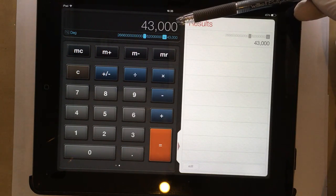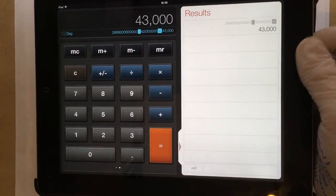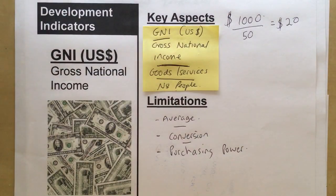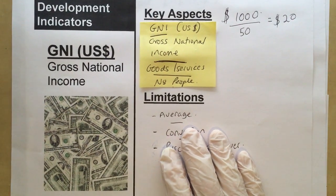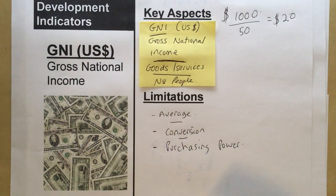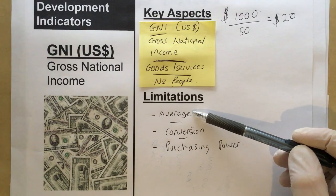GNI is a good indicator — it tells you about the wealth in a country, how much money is coming in based on goods and services, and therefore what can be spent on education, healthcare, infrastructure, and roads. It also links to many of the other development indicators. However, it does have some limitations.